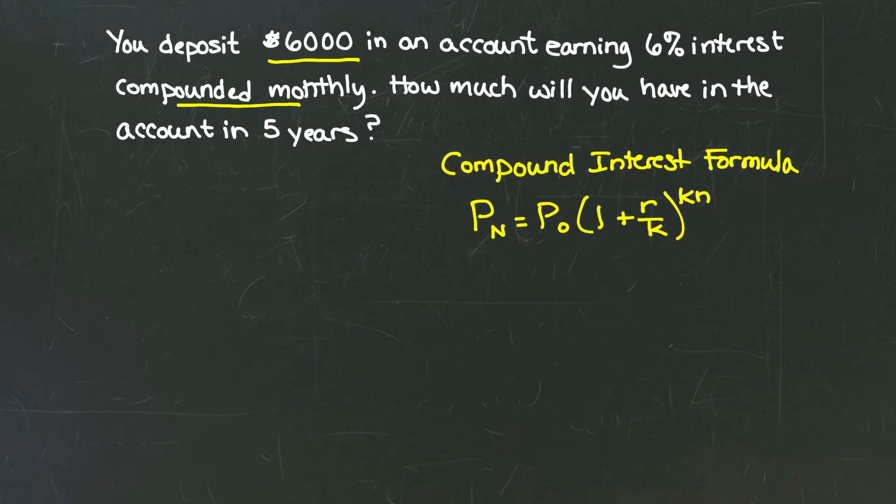Let's recall the compound interest formula. The compound interest formula states that the future amount in the account, or the principal after n years, is equal to the initial principal, or the initial deposit, times 1 plus r over k raised to the kn.